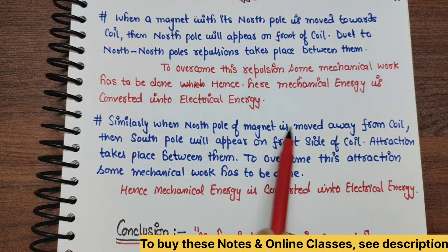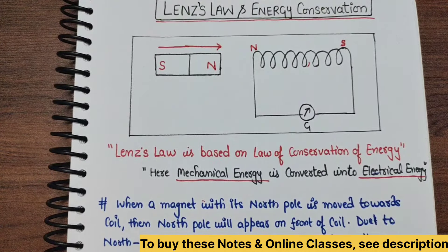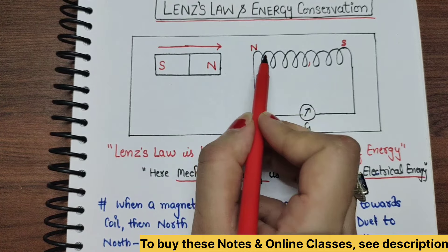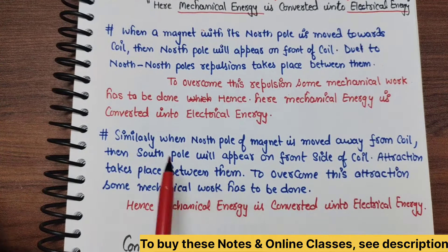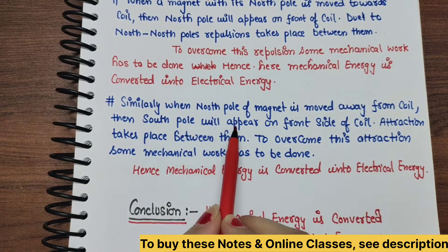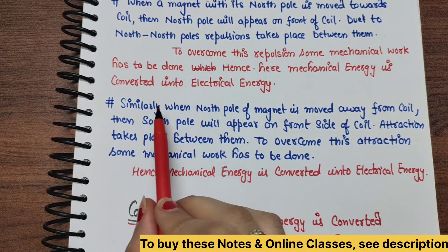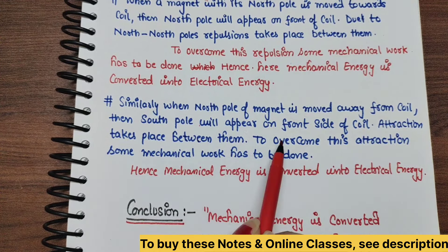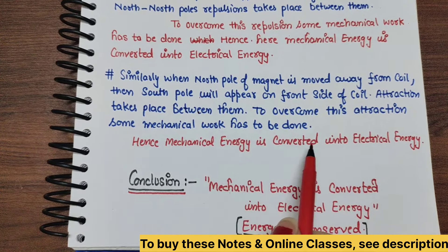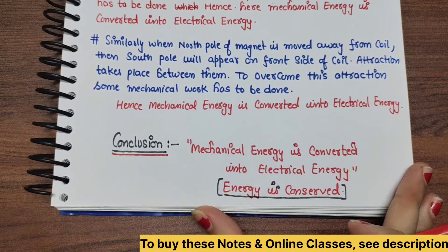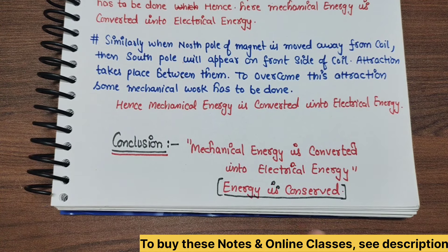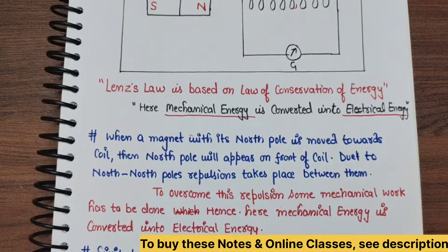Similarly, when the north pole of the magnet is moved away from the coil, the south pole will appear on the front side of the coil. There will be attraction between north and south poles, and you need to do mechanical work again to overcome it. Hence, the mechanical energy is once again converted into electrical energy. The conclusion is: mechanical energy is converted into electrical energy, meaning energy is conserved. Always remember that Lenz's law follows energy conservation.